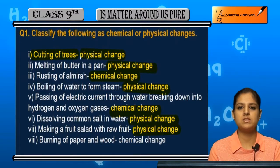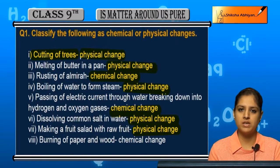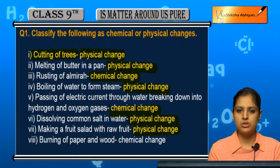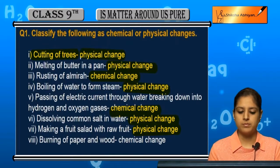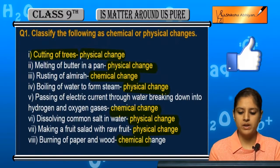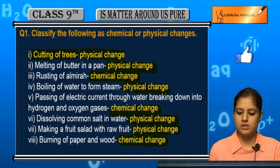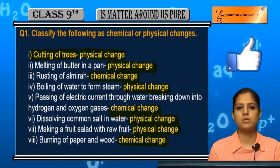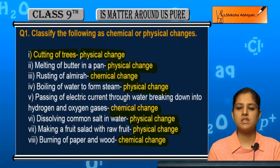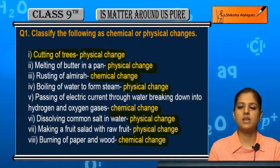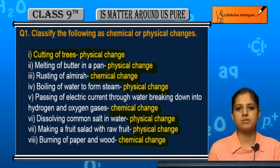There is no new substance formed, only new physical properties appear, and there are no new chemical properties — just like that, everything remains the same. Burning of paper and wood is a chemical change because new substances are produced.